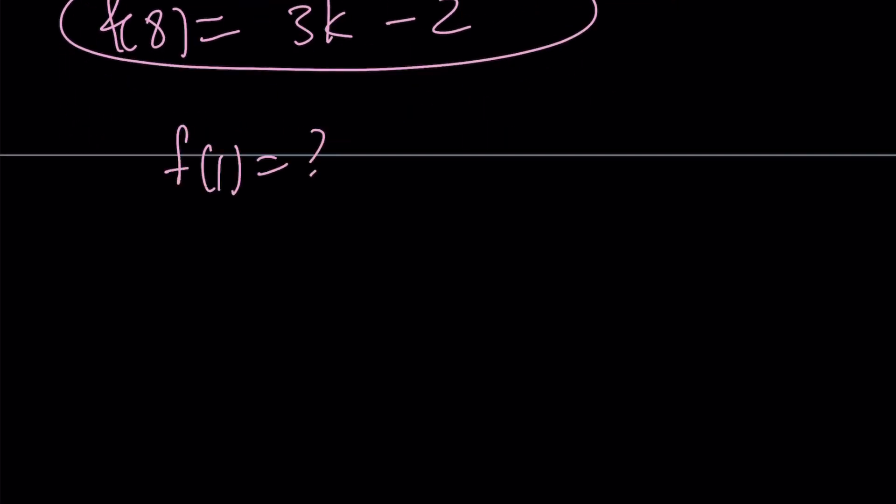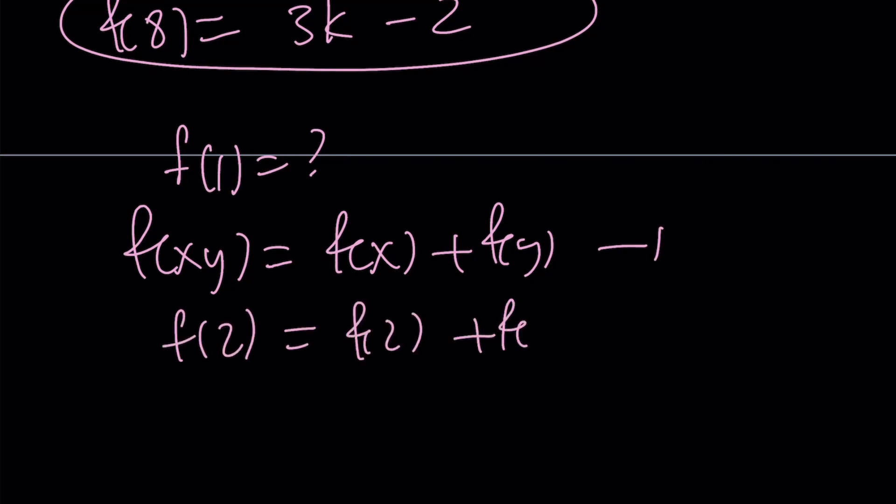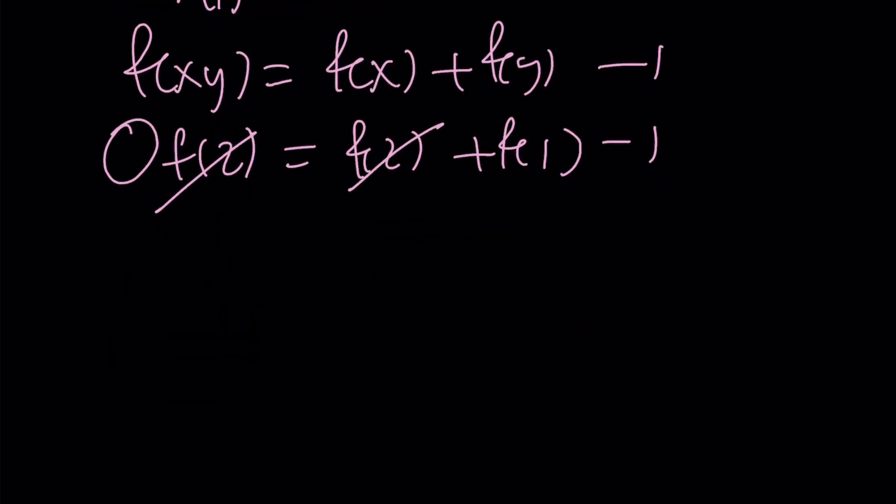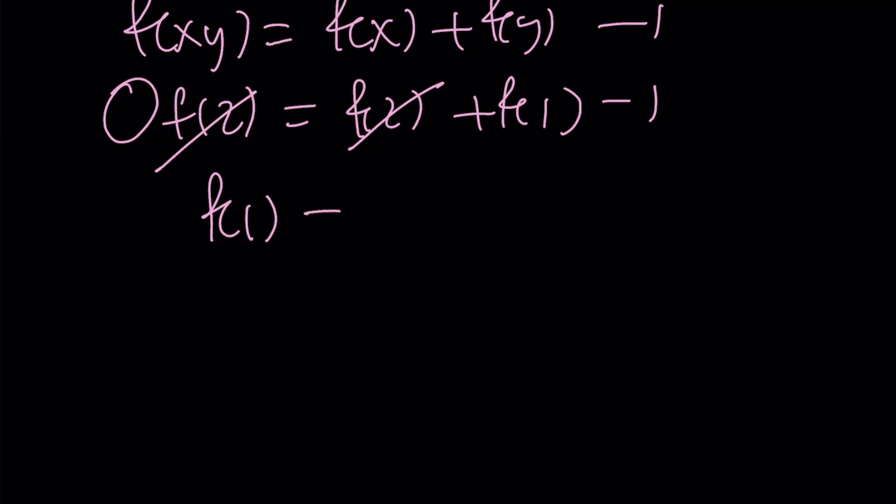Well, to find f of 1, I can just go ahead and use our expression with 2 and 1, right? 2 times 1 is going to work. So f of 2 is going to be f of 2 plus f of 1 minus 1. Mysteriously, f of 2 cancels out, leaving us with 0. That means f of 1 equals 1.